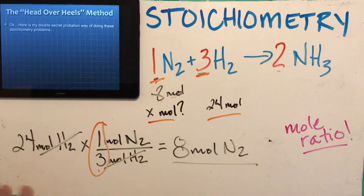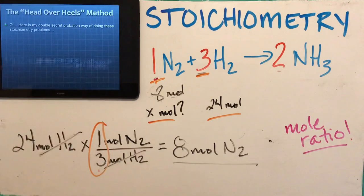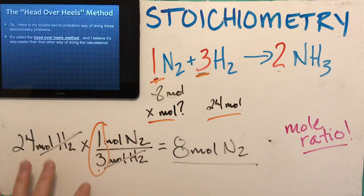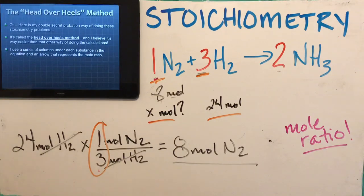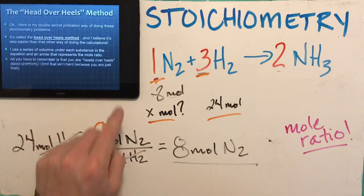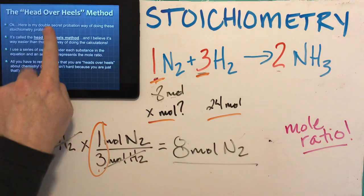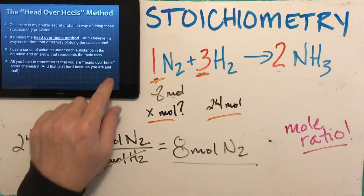This is my double secret probation way of doing this — other teachers won't know this. It's called the head over heels method. It's way easier than doing it the other way but you still get the correct answer. I use a series of columns under each substance in the equation and an arrow that represents the mole ratio. All you have to remember is that you were head over heels about chemistry — if you can remember that, you're going to be fine.